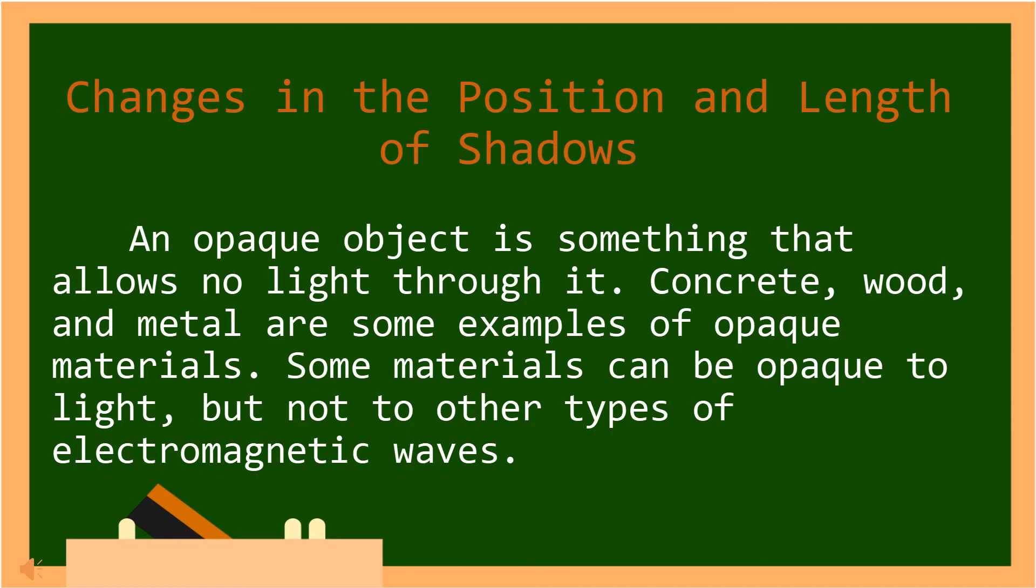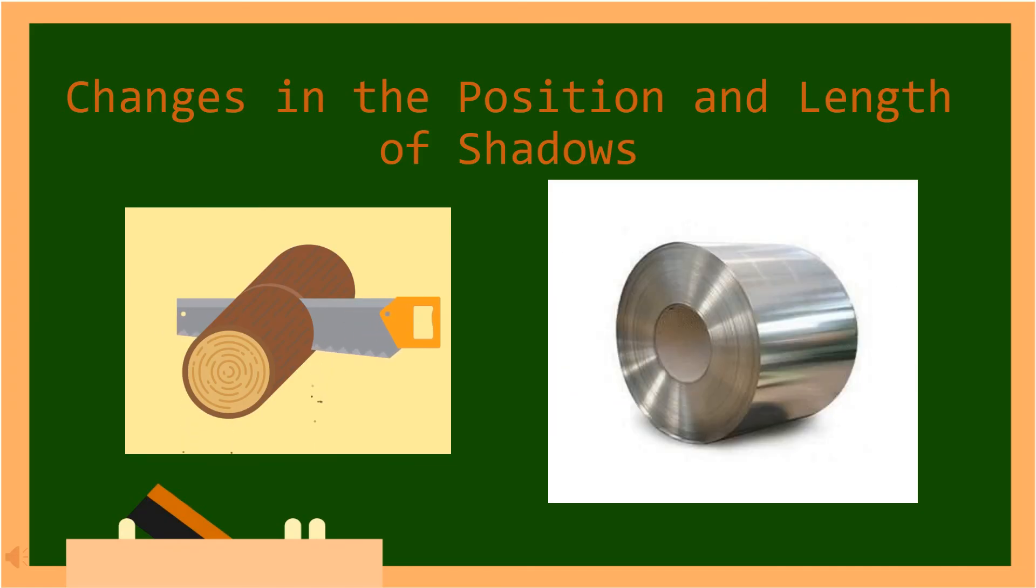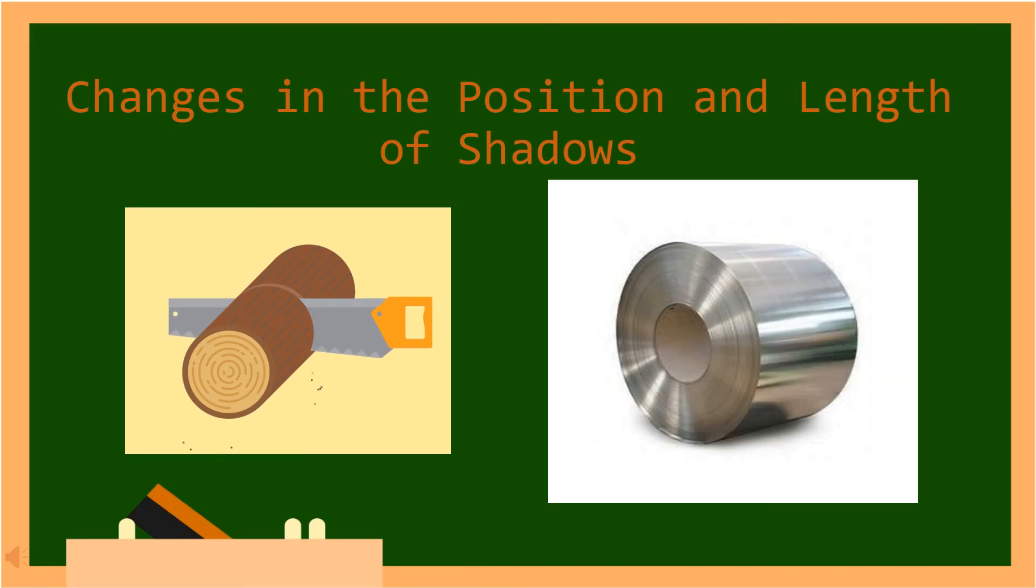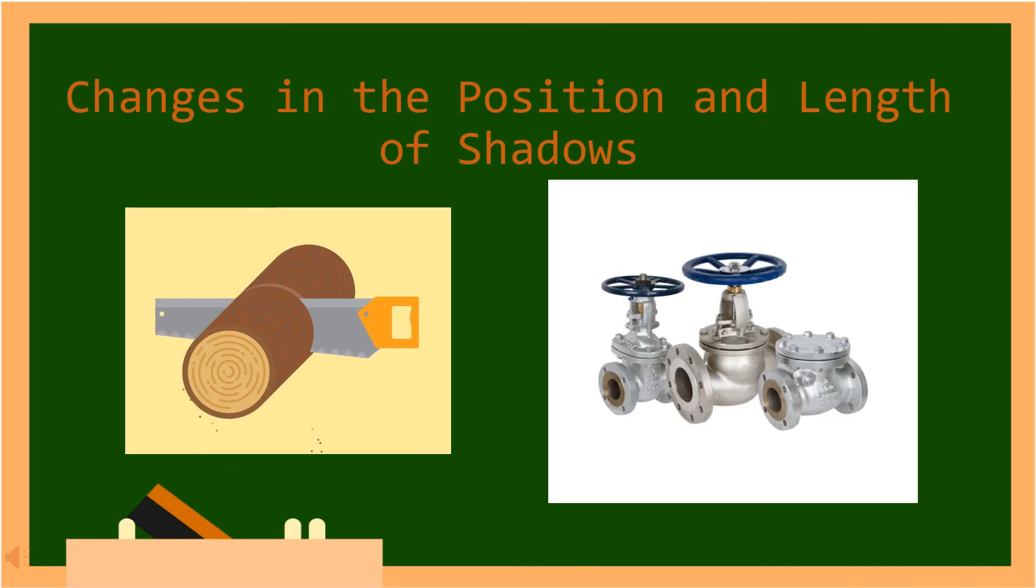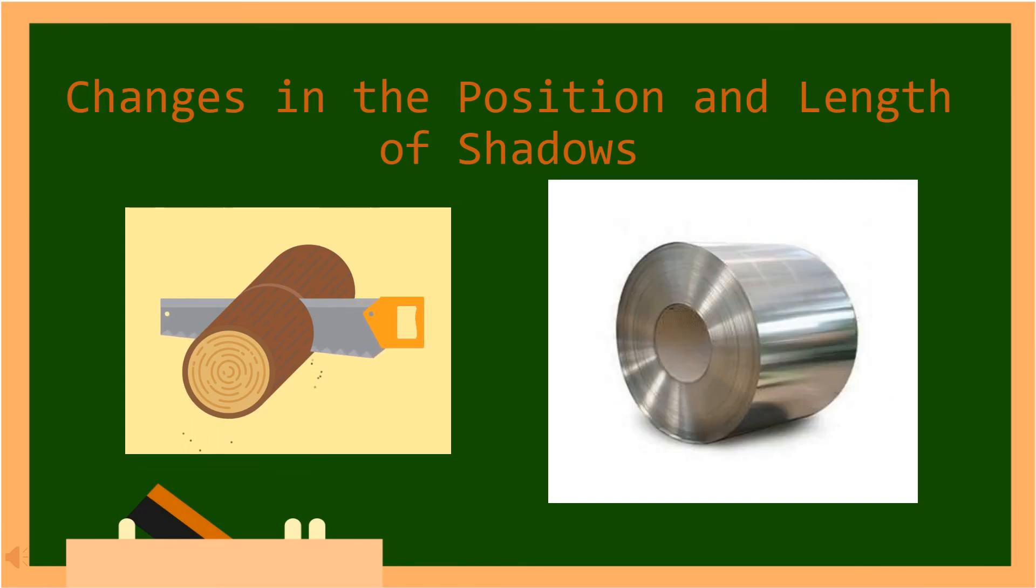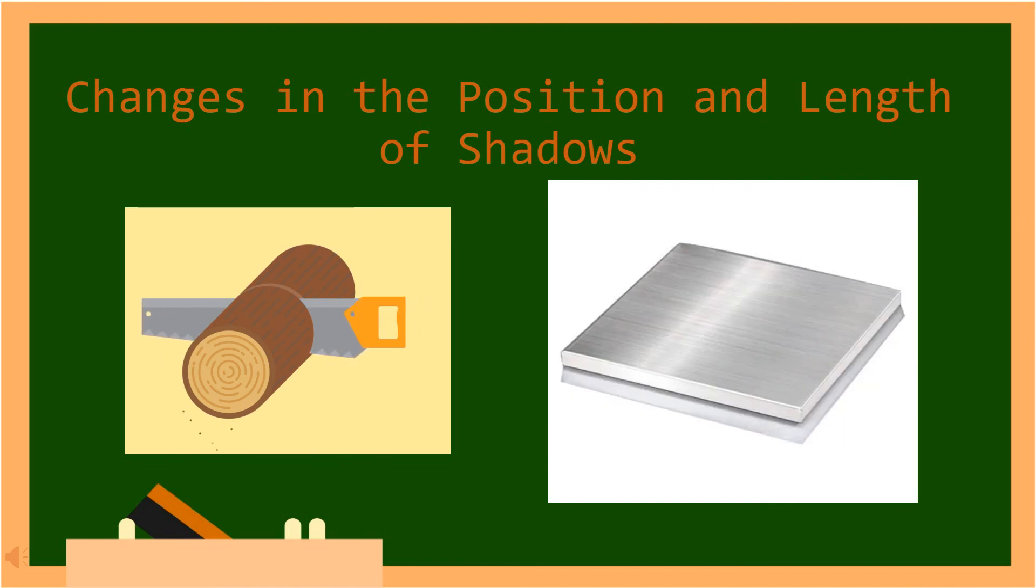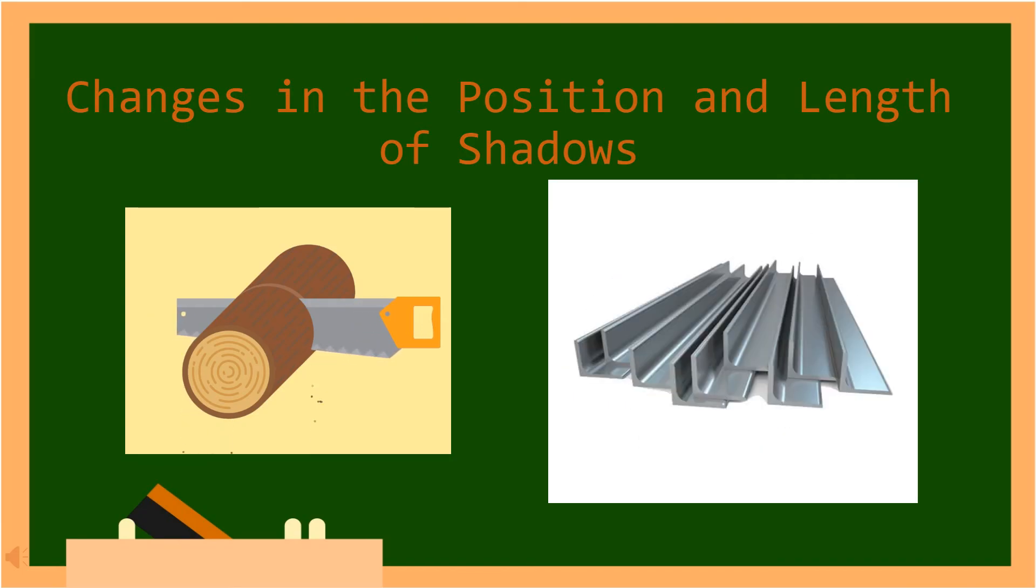An opaque object is something that allows no light through it. Concrete, wood, and metal are some examples of opaque materials. Some materials can be opaque to light, but not to other types of electromagnetic waves. In Tagalog, ang isang opaque na bagay ay isang bagay na hindi tinapayagan ng ilaw sa pamamagitan nito. Ang kongkreto, kahoy, at metal ay ilang mga halimbawa ng mga opaque na materyales. Ang ilang mga materyales ay maaaring maging opaque sa ilaw, ngunit hindi na sa iba pang mga uri ng mga electromagnetic waves.